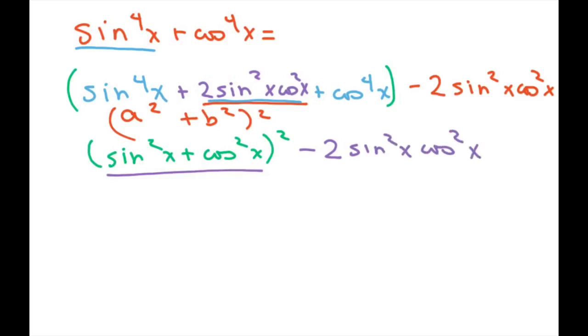Alright, now the reason we did that is because sine squared plus cosine squared is just one. So one squared is just one. So you have one minus two sine squared of x cosine squared of x.